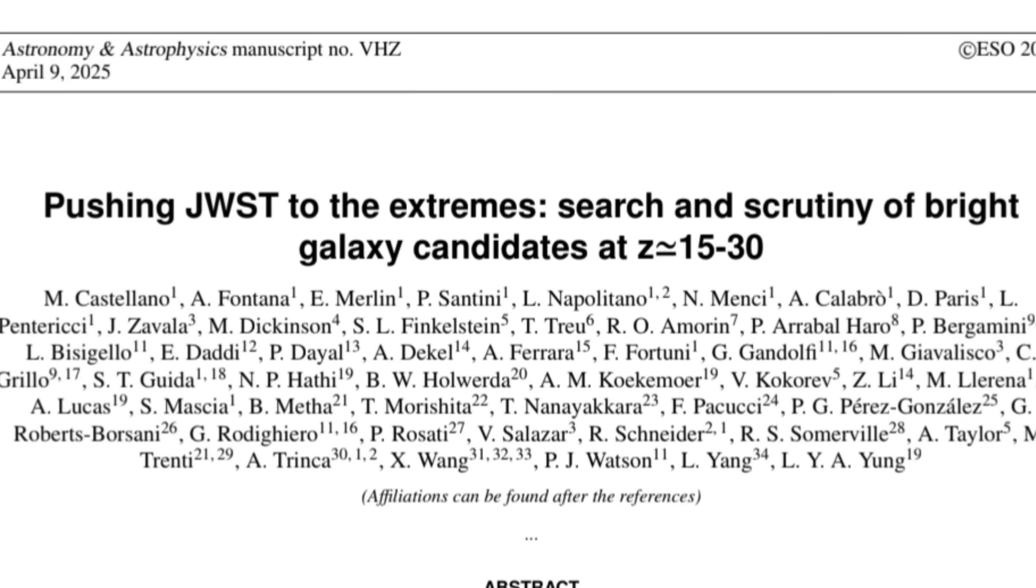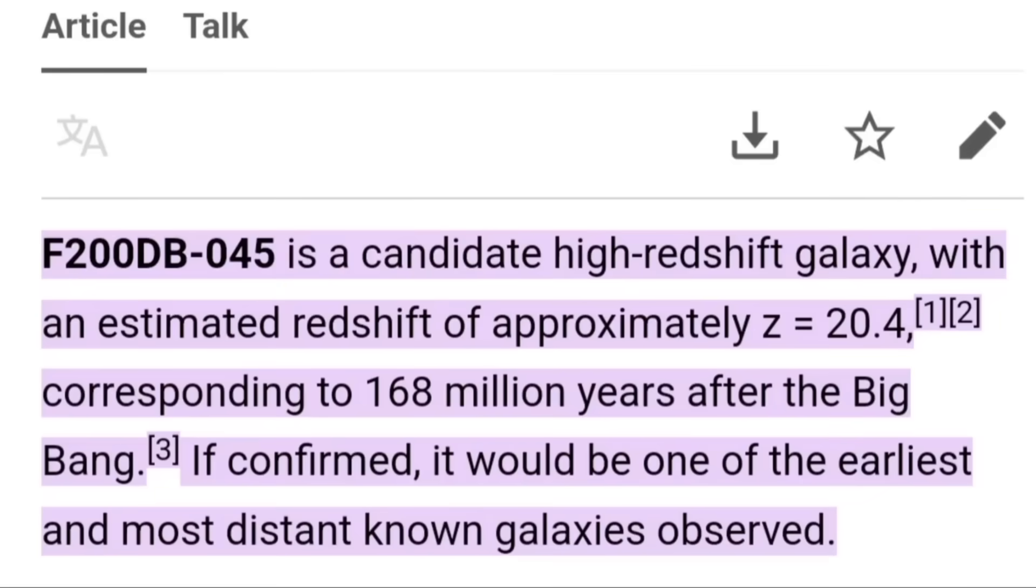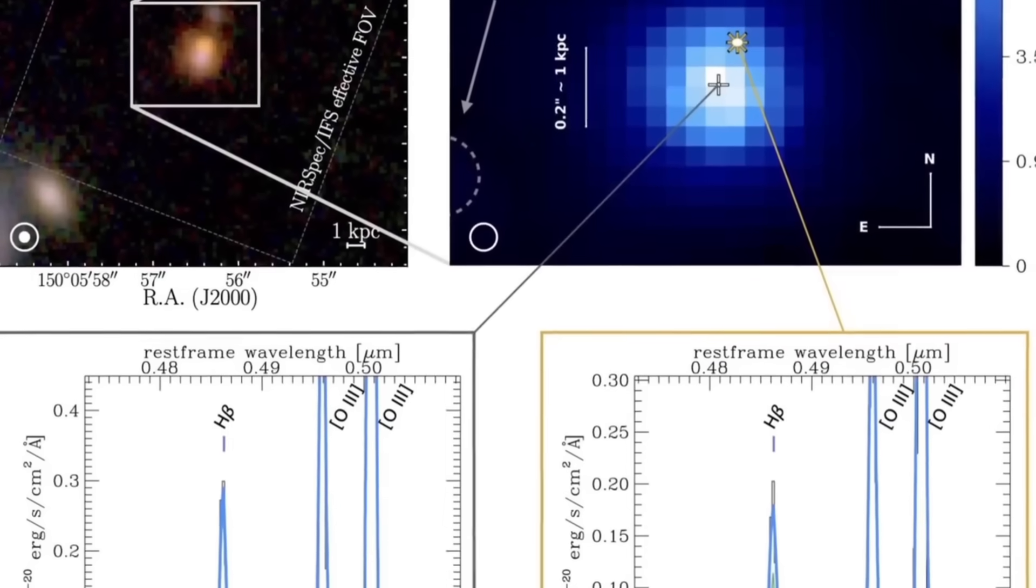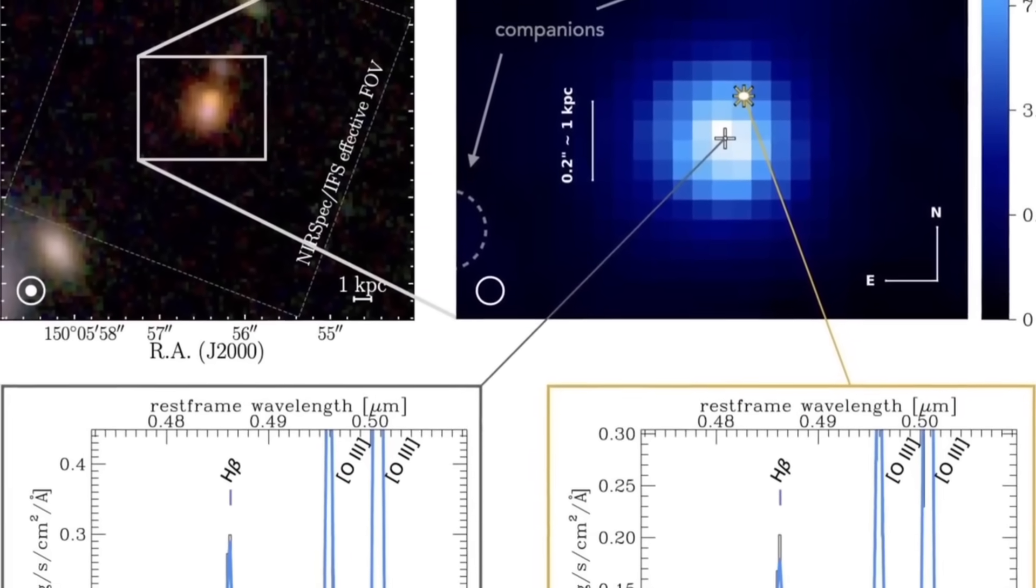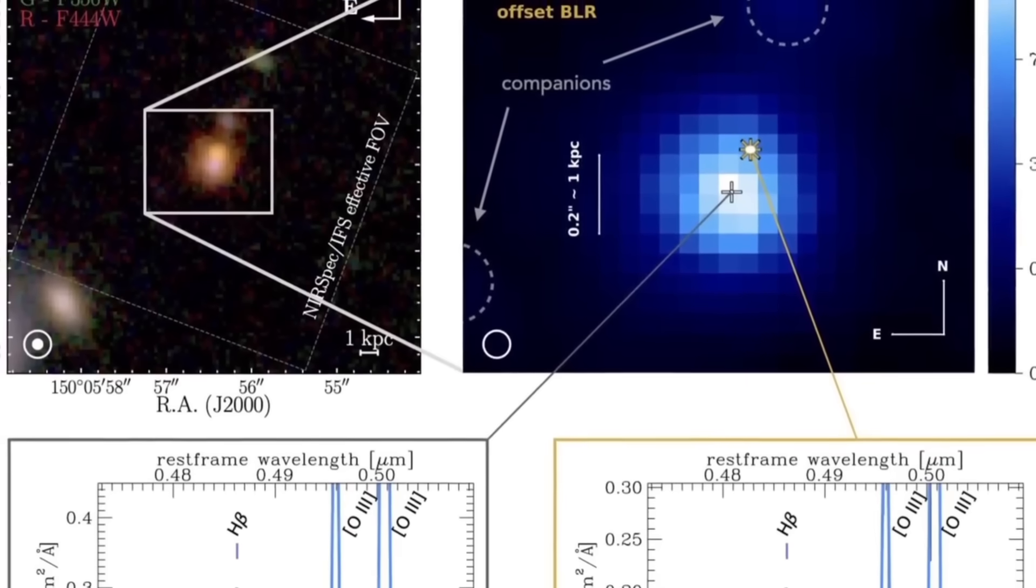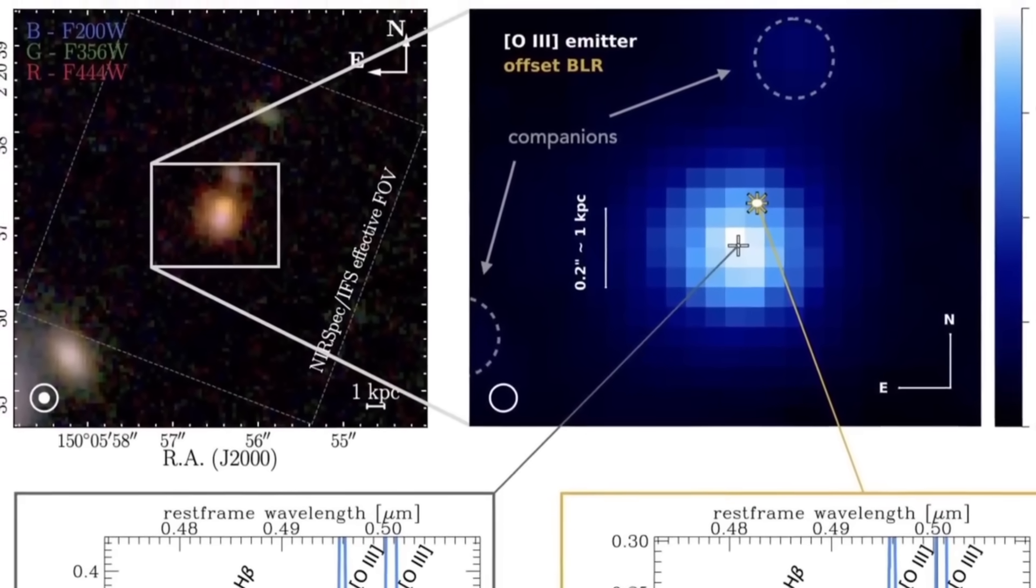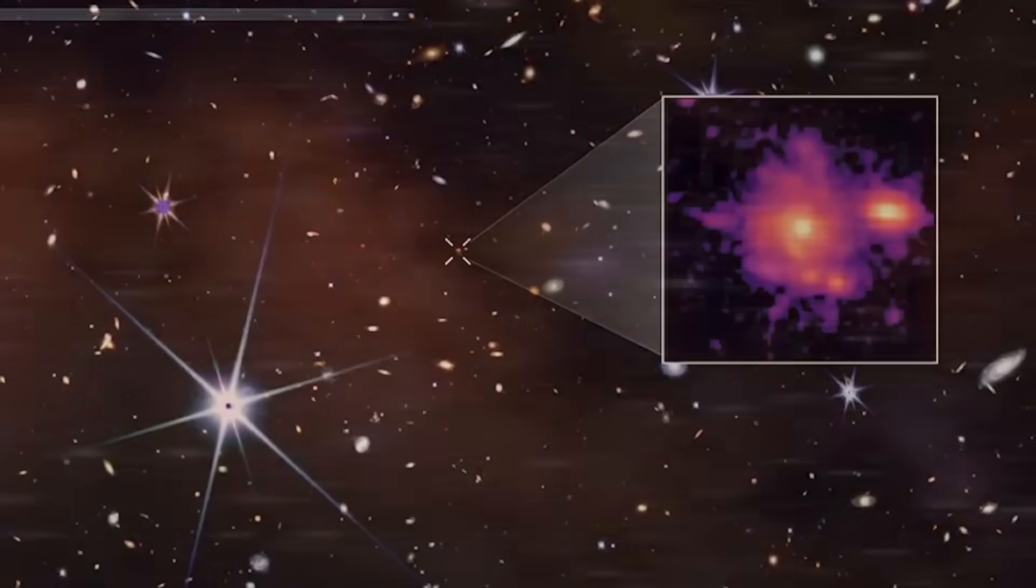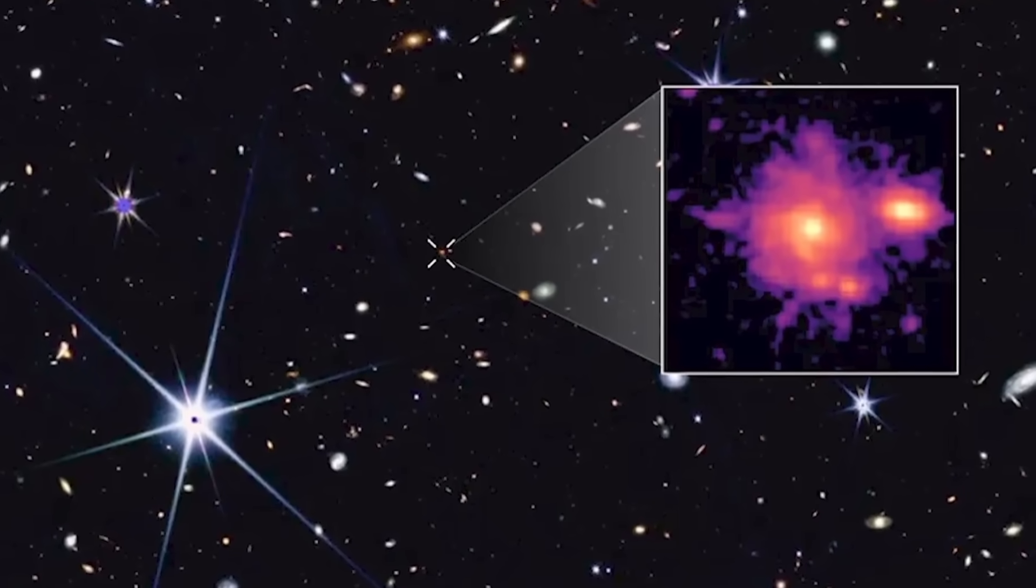Even more surprising, scientists have detected galaxy candidates at redshift values of 20 and beyond, meaning they may have formed when the universe was just around 200 million years old. These are still unconfirmed and need more testing, but if proven they would push the limits of what our current theories can handle. What's even more shocking is the nature of these early galaxies.